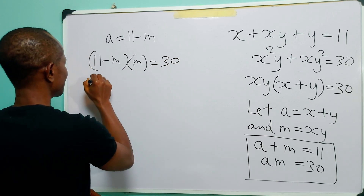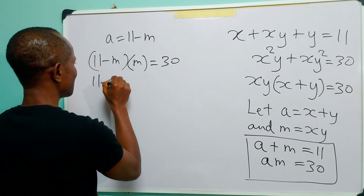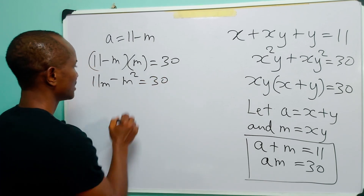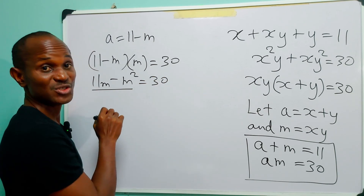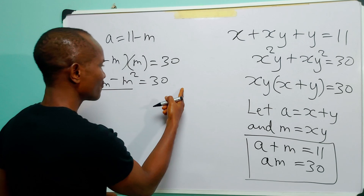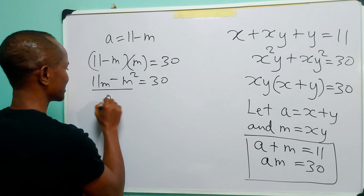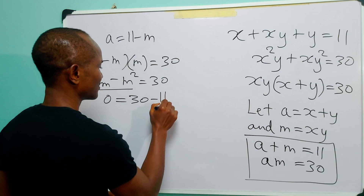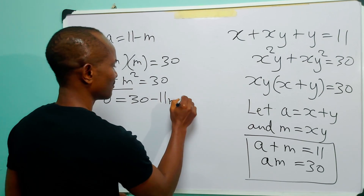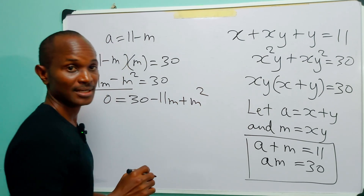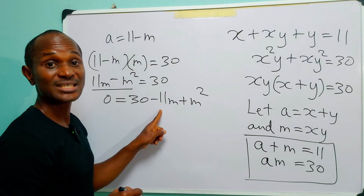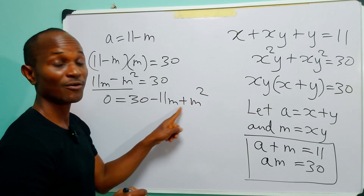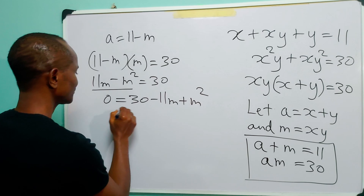Opening up the bracket, we have 11m minus m squared is equal to 30. Now sending both terms on the left hand side over to the right hand side, we have that 0 is equal to 30 minus 11m plus m squared. Now we have a quadratic equation that we can factorize and solve for values of m.